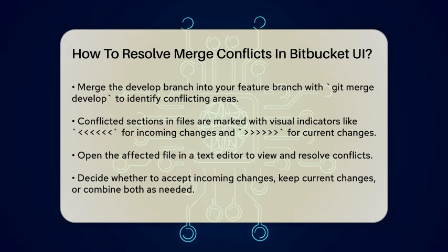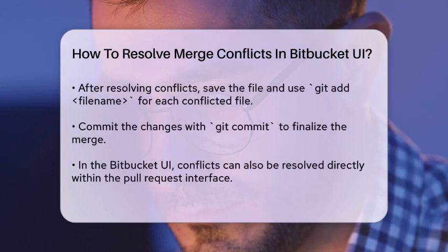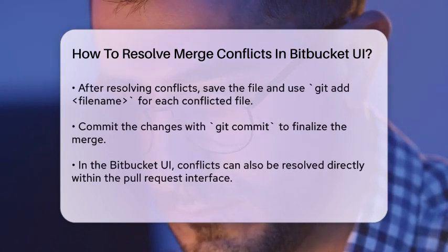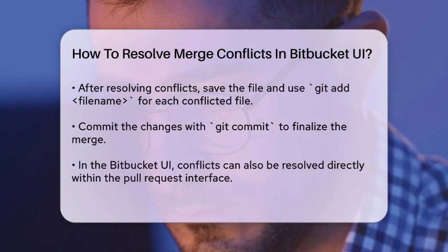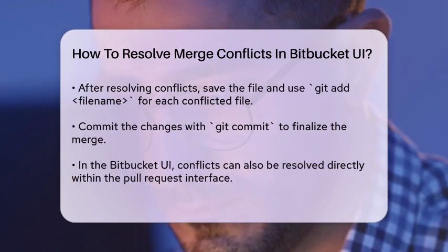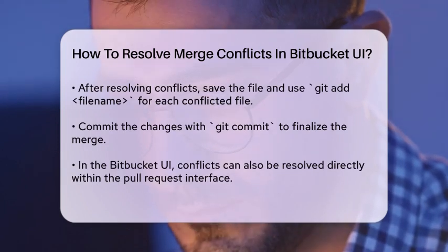To resolve the conflict, open the affected file in a text editor. You'll see the conflicting sections marked. Here you can decide which changes to keep or discard. You can choose to accept the incoming changes, keep the current changes, or even keep both changes if that's what you need. Once you've made your changes, save the file and close it.